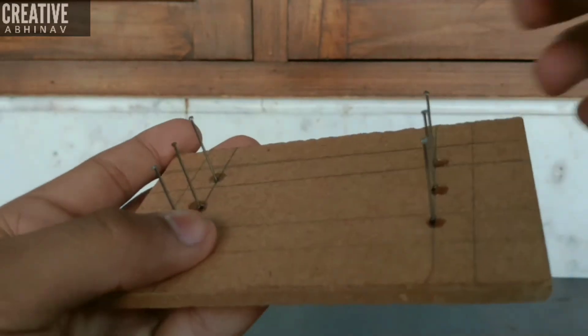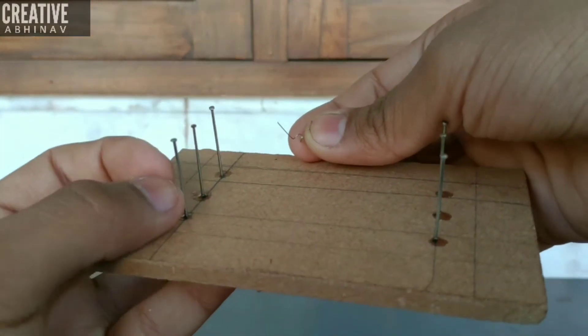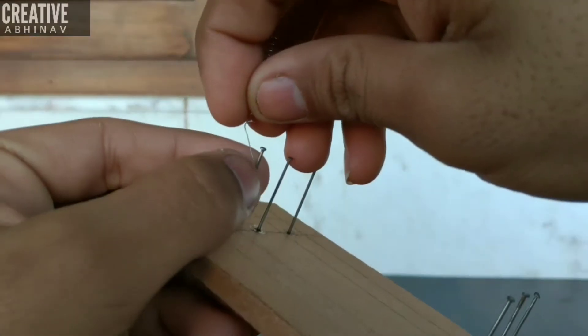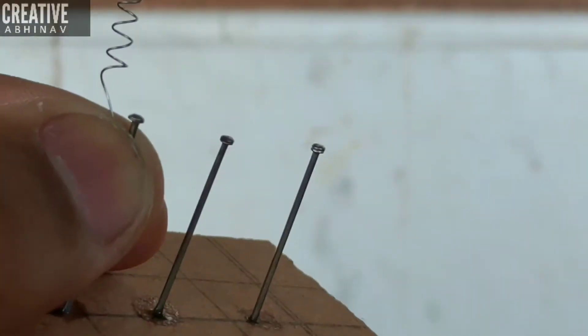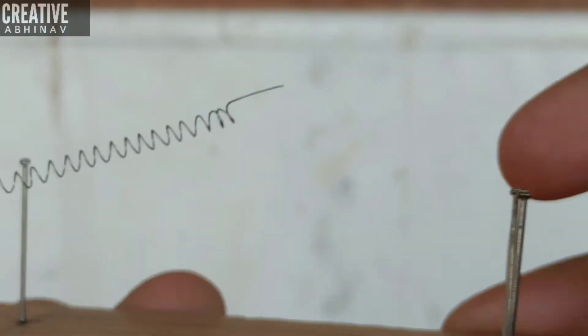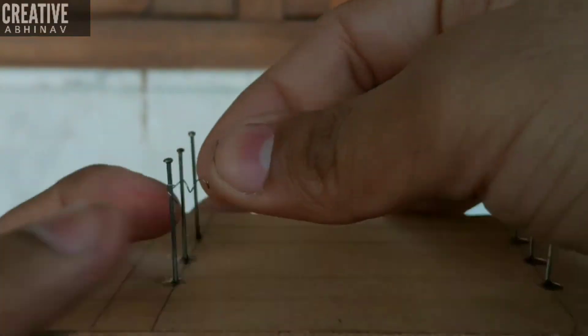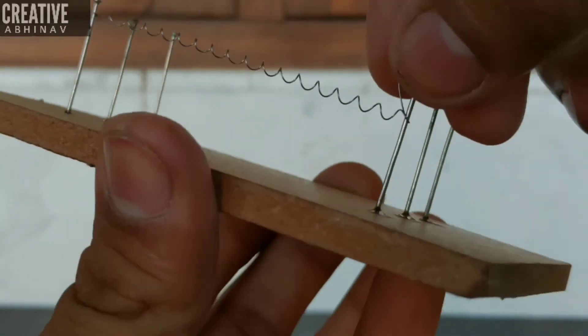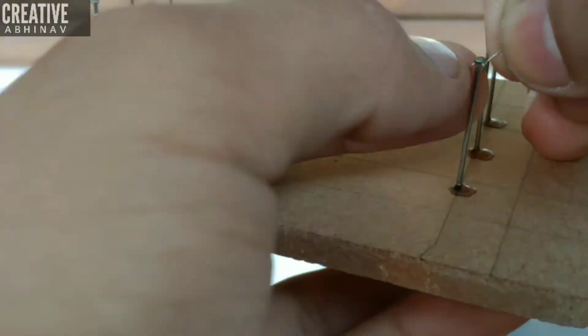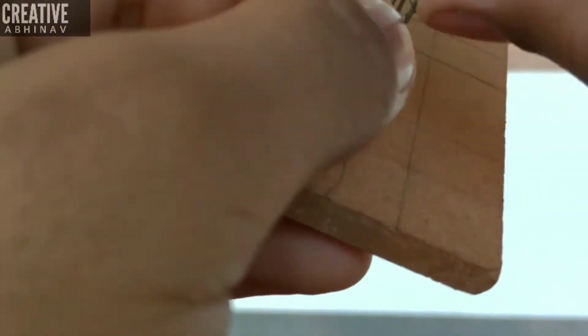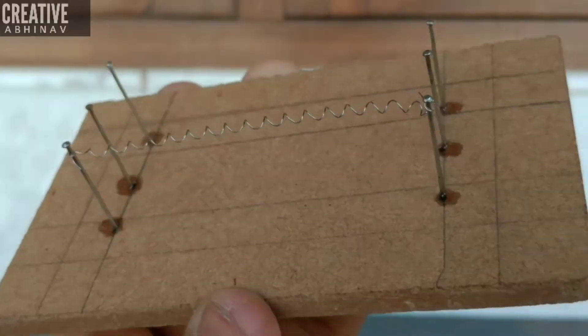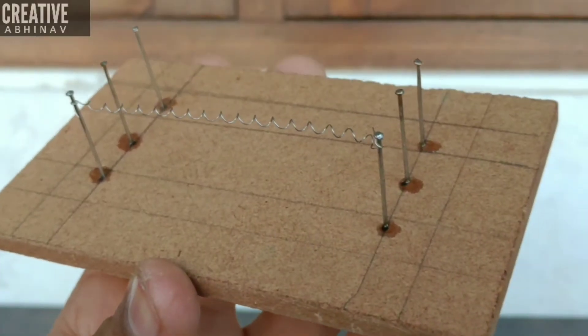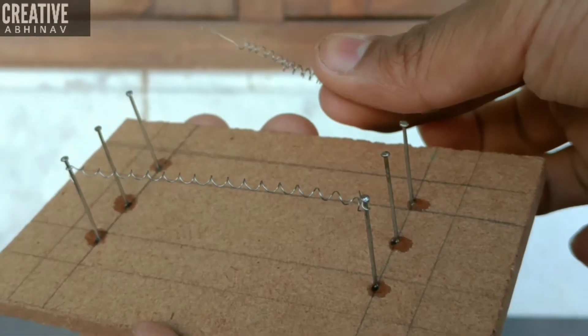Then let's take our heater board. What we have to do is attach our nichrome coil with metal pins. Now slightly stretch the coil, then we have to join it to the other end. Then we have to join another two coils.